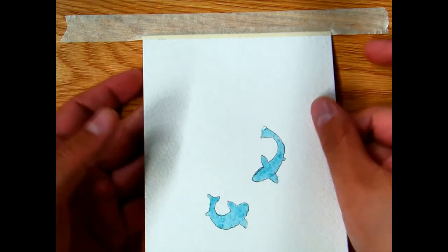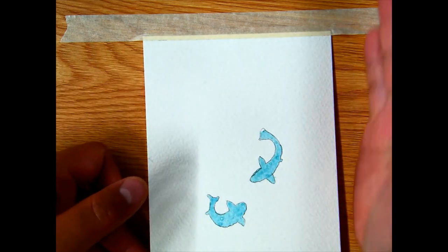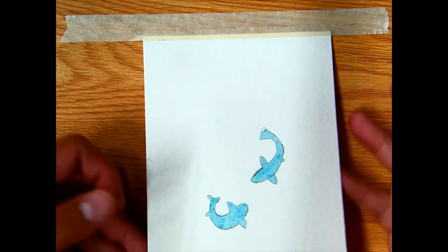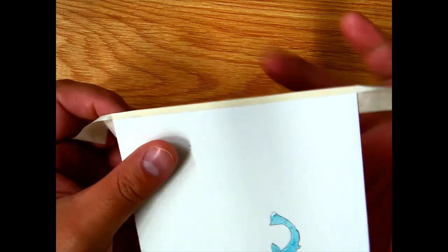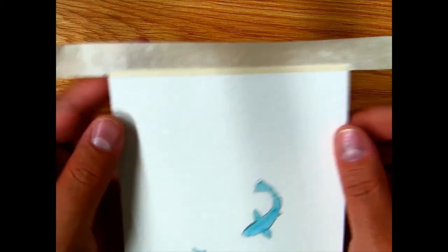Taping down your work is going to allow you to prevent it from curling in on itself and to have a little bit more control. Thankfully, this paper is really thick, and so it's not going to curl in too terribly bad, but this taping down option is up to you. It's optional. You don't have to do it. It just makes your life a little bit easier.